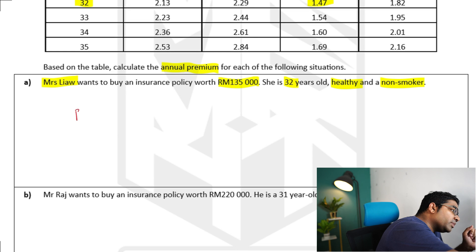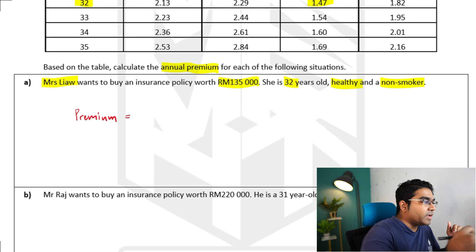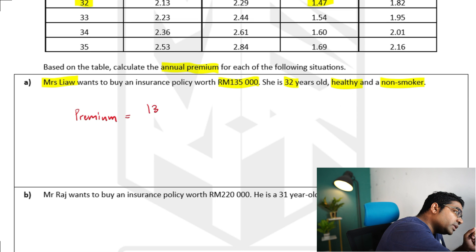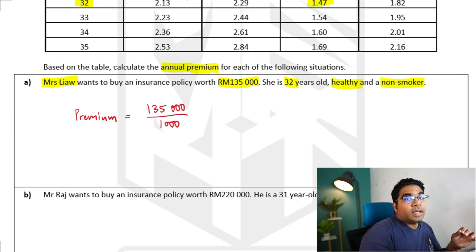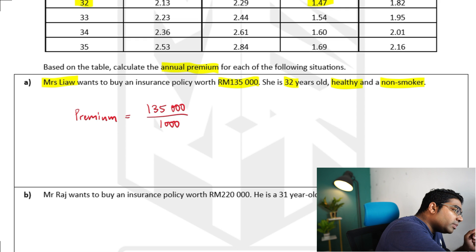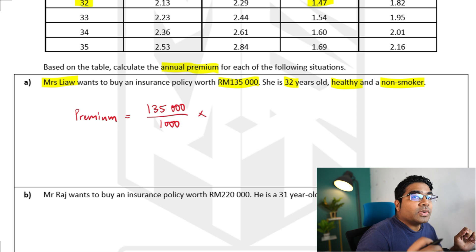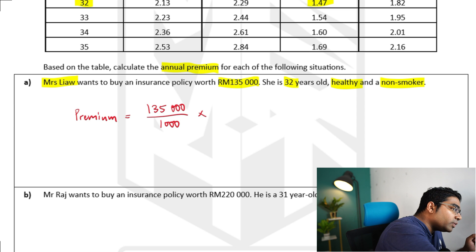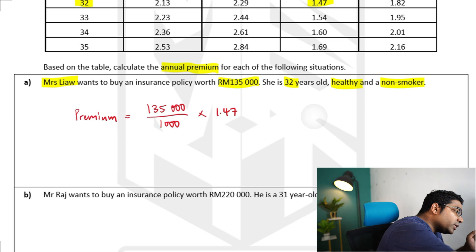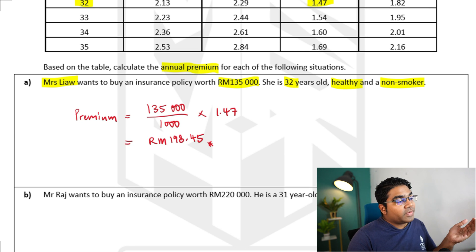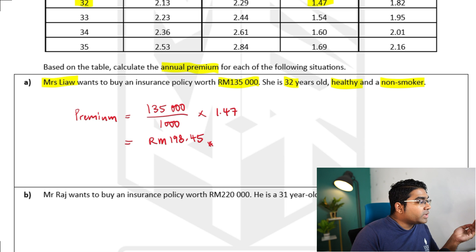Let's apply the formula. Her annual premium will be: first, we need to find out how many thousand ringgits there are in her face value — so this would be the face value of the policy, which is 135,000, divided by 1,000. Then we multiply by the rate charged per thousand ringgit face value of the policy, which is 1 ringgit and 47 cents. Therefore, her annual premium would be RM198.45. This is the amount that Mrs. Liao would have to pay every year for a face value of RM135,000.